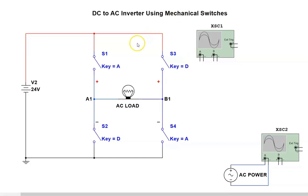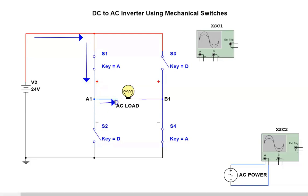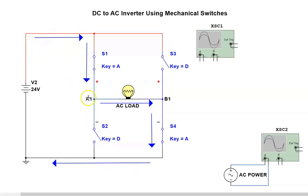I'm going to close switch S1 and S4. Current flows from the battery source through S1, through the load, through S4, and back to the source. So that's your current flow in one direction.